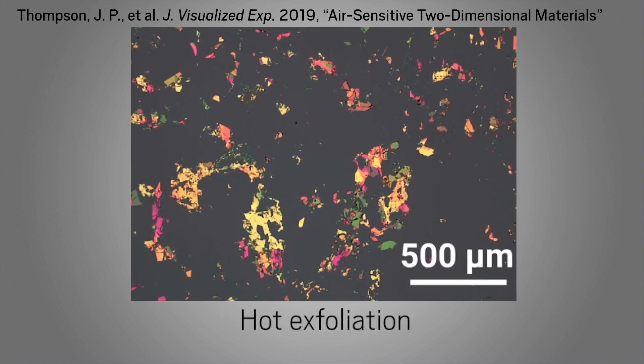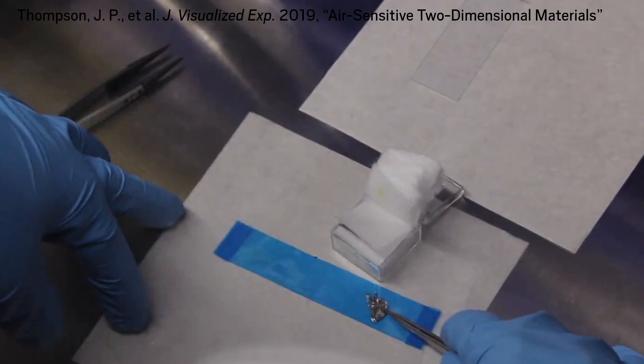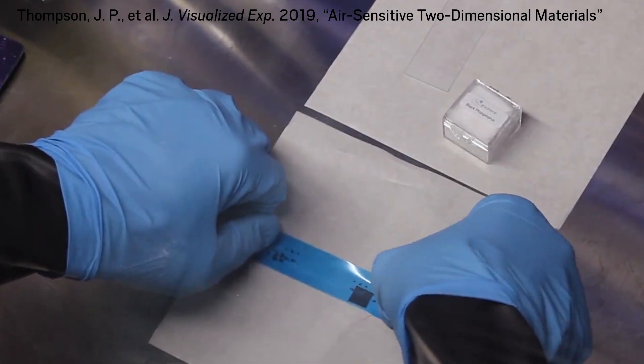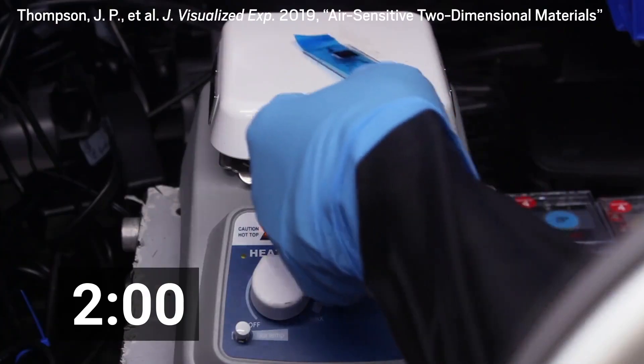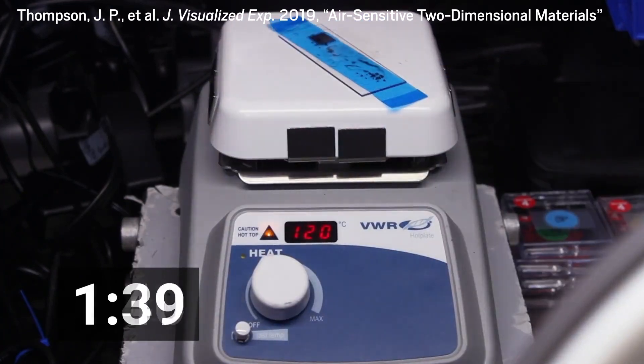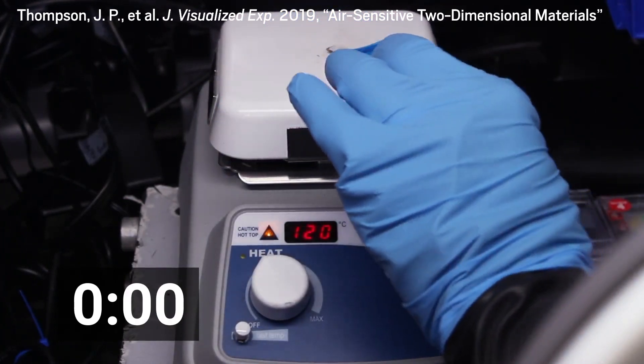Hot exfoliation, which involves heating a peeled material to help it bond to a substrate, can create larger flakes. The team separated flakes of black phosphorus using adhesive tape, then stuck the tape to a silicon chip. Heating the black phosphorus sandwich drives out gas bubbles, increasing the contact area between the sample and the chip.